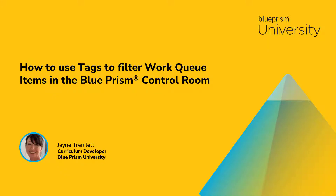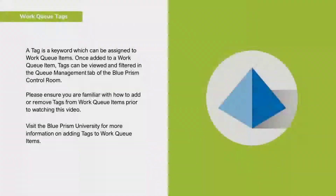Hello and welcome to this how-to video from Blue Prism University. During this video you'll learn how to use tags to filter work queue items in the Blue Prism control room. A tag is a keyword which can be assigned to work queue items. Once added, tags can be filtered and viewed in the queue management tab of the Blue Prism control room.